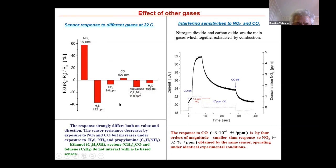For instance, the sensor resistance decreases by exposure to nitrogen dioxide and carbon dioxide, but increases by exposure to sulfide, ammonia, propylamine, and water vapors.